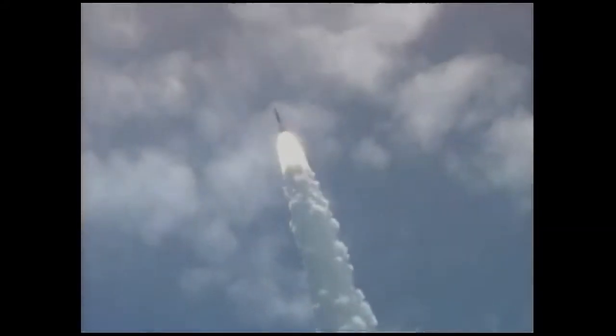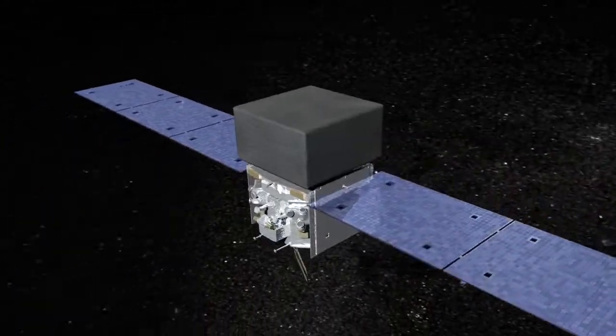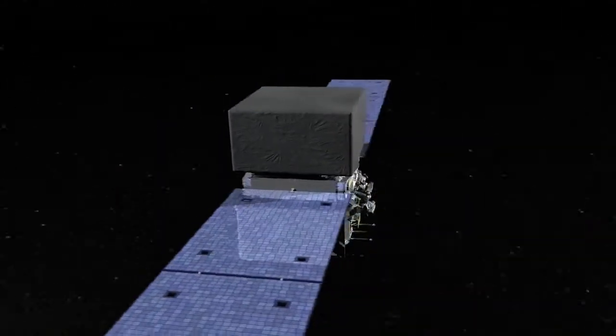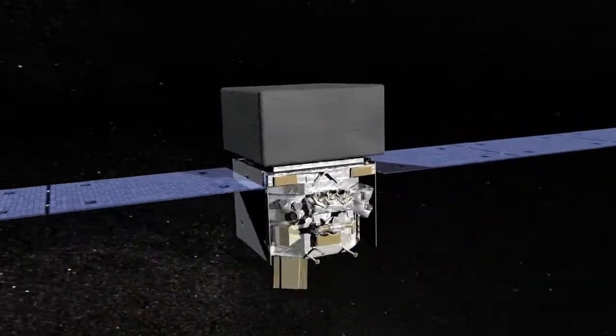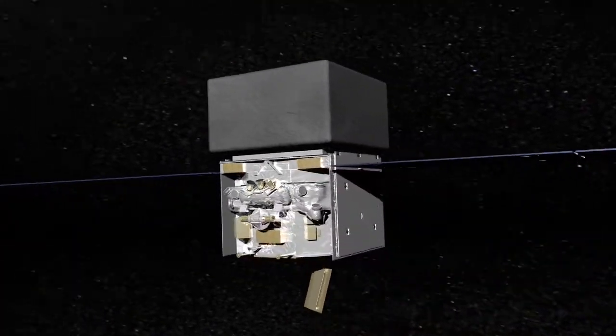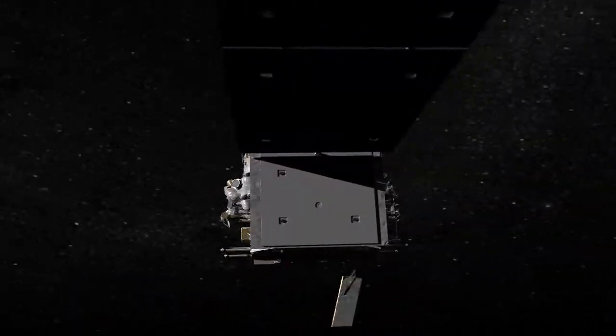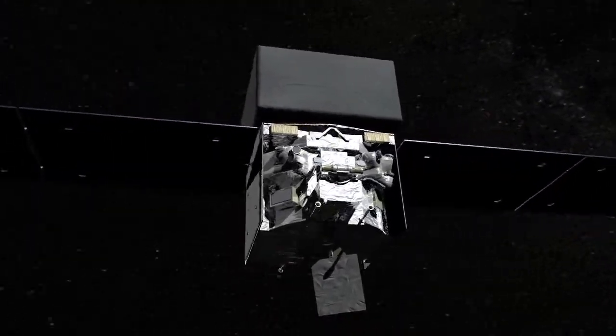Launched on June 11, 2008, GLAST, renamed the Fermi Gamma-ray Space Telescope, has been collecting gamma-ray data for five years. In that time, it has made some astounding observations of some of the most powerful events and objects in the universe, including some right on our doorstep.